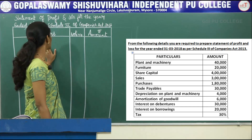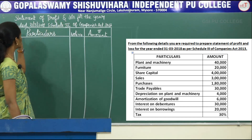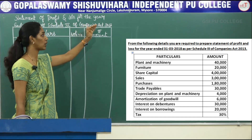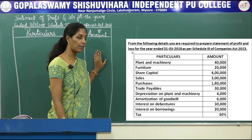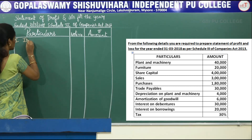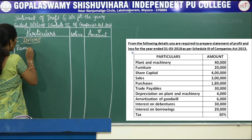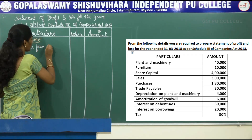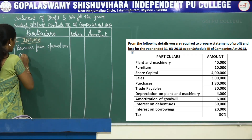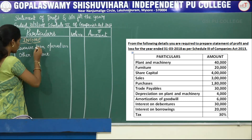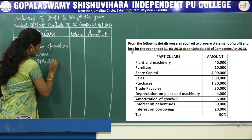As you all know, you have to write the heading correctly: Statement of Profit and Loss for the year ended 31st March 2018, Schedule 3 of Companies Act 2013. First column: particulars, second column: note number, and the third column: amount. First, you have to write the heading income. Under that, the first item is revenue from operation, also called as sales. The second item is other income. When you add together, you will get total income A.